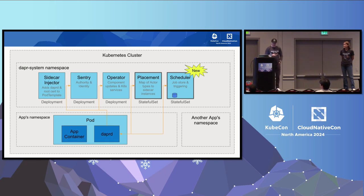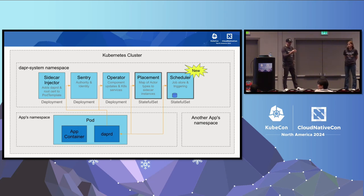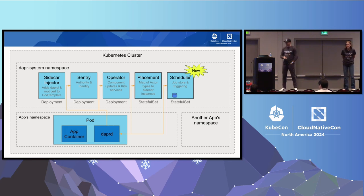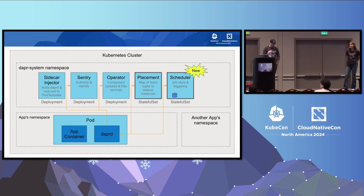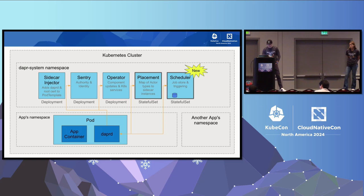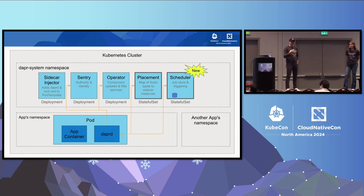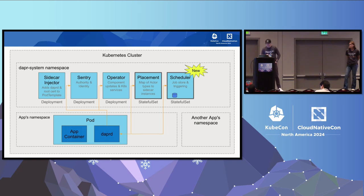We have Placement, which we're going to talk more about today. We call it the placement table, which maps for each actor type which sidecar instances host that particular actor type. And brand new, we have the Scheduler, which handles the storage and triggering of cron job-like triggers. For the first time it has persistent storage — the jobs are persistent and it has to be durable. It's the first time we have a control plane that requires durability.